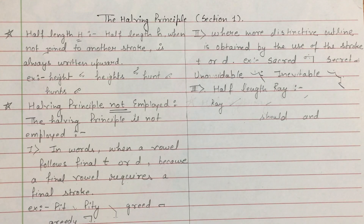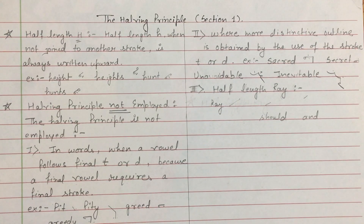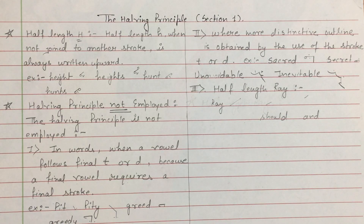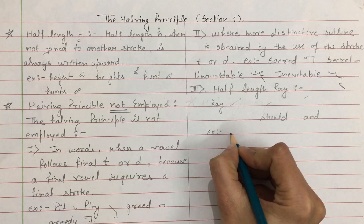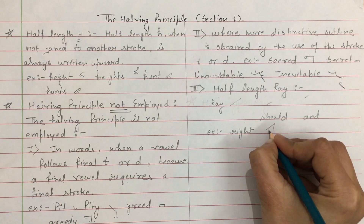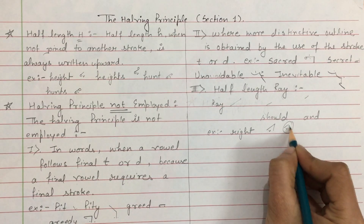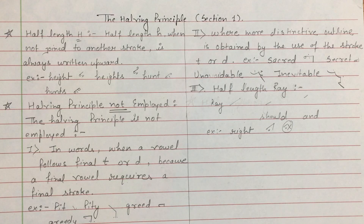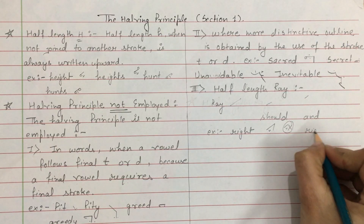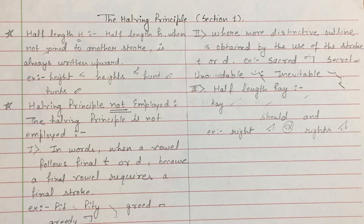इसलिए इस case में complete outline draw करनी है। For example, 'right' — ray and T, I के vowel को place करेंगे। Half ray इस्तेमाल नहीं करेंगे — यह गलत हो जाएगा। 'Rights' — ray, T and S।